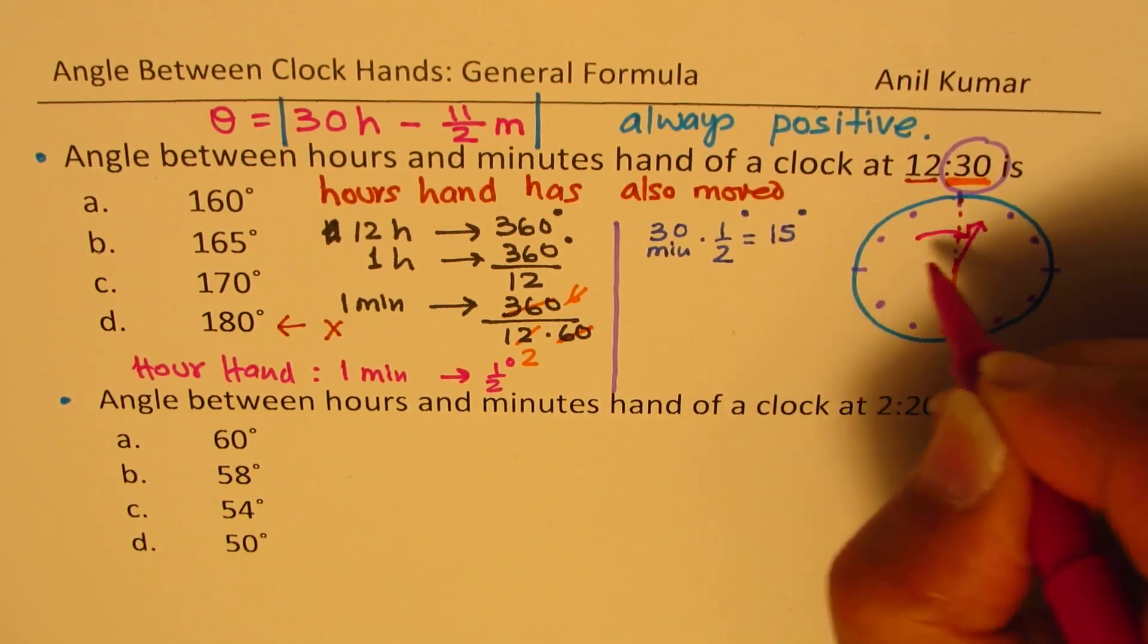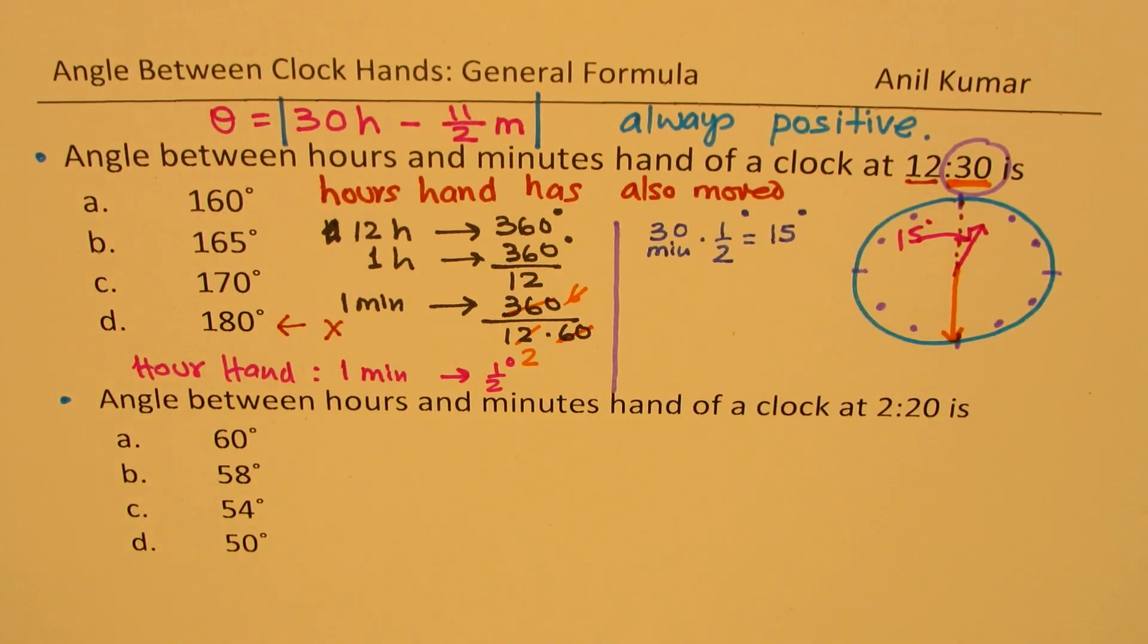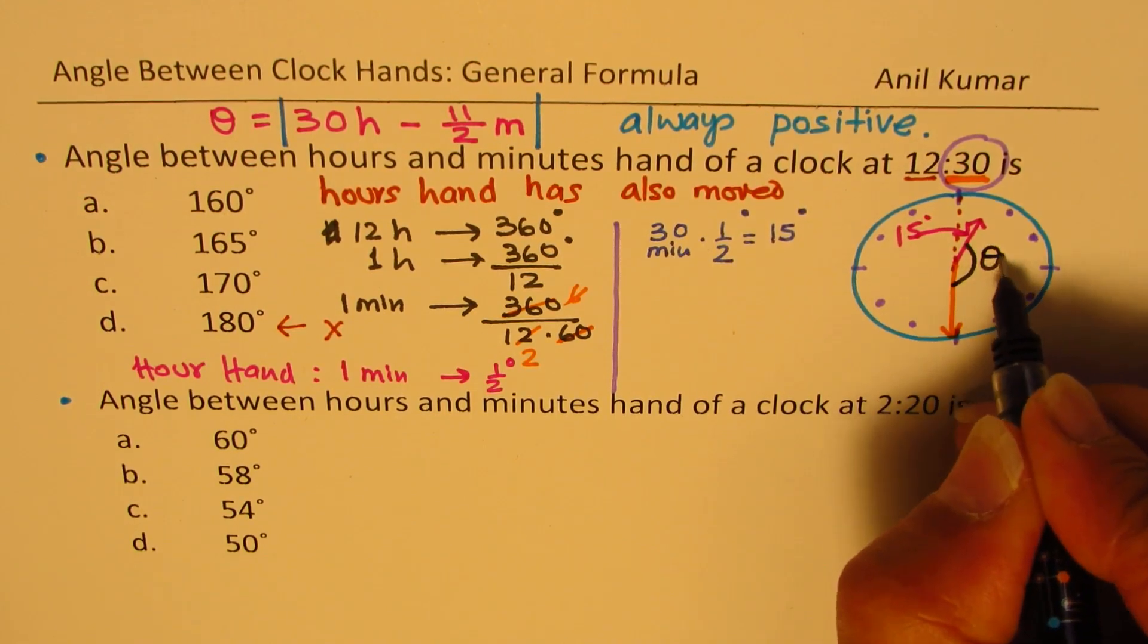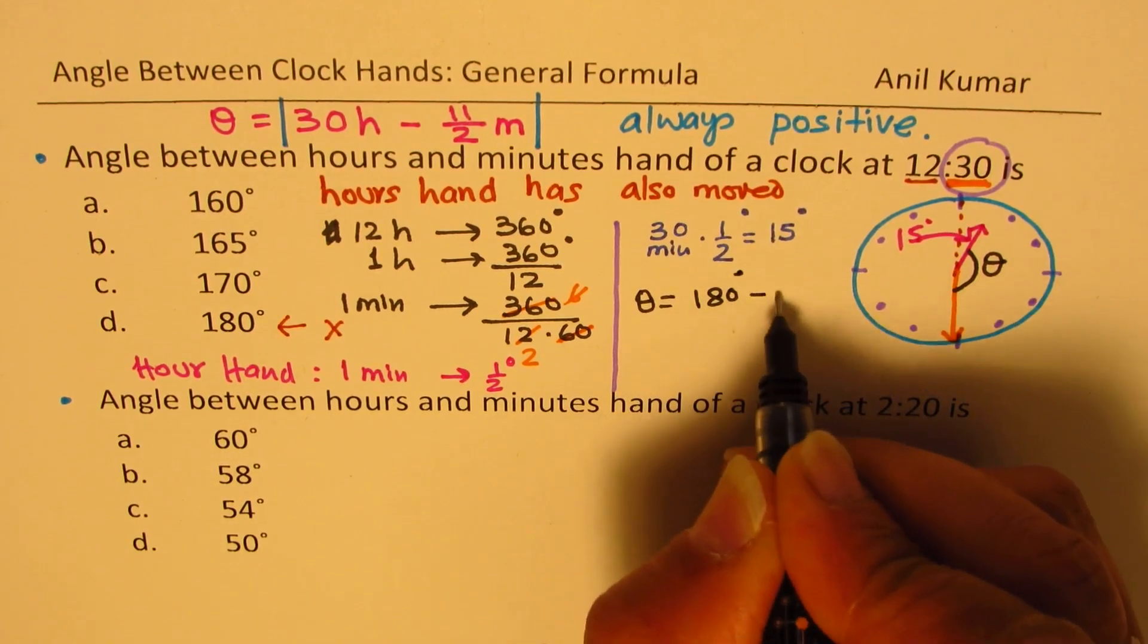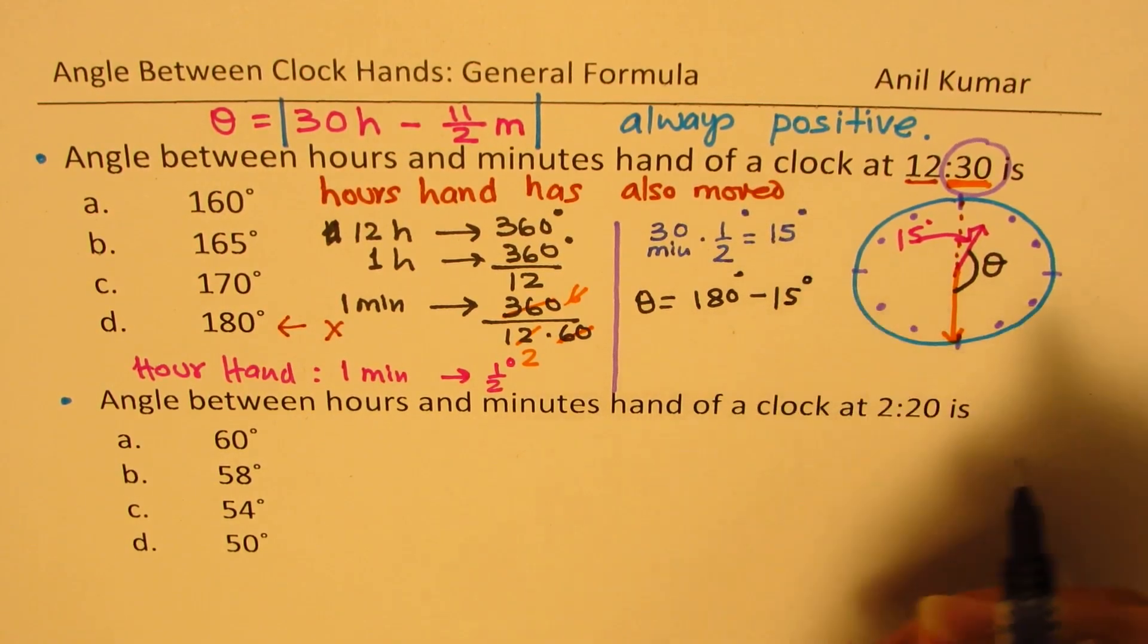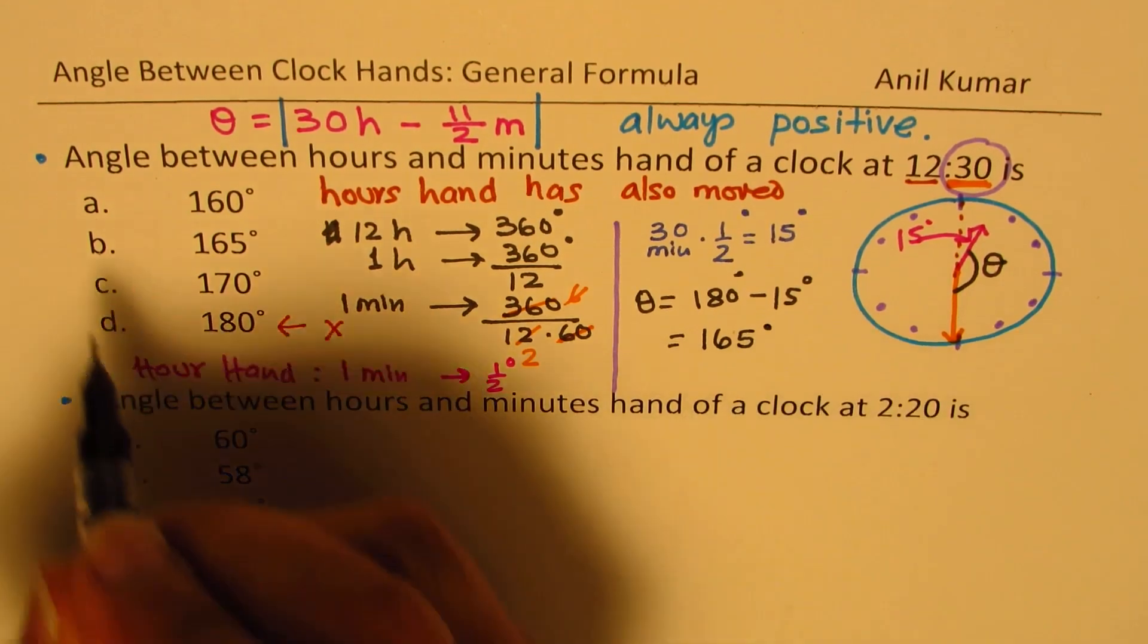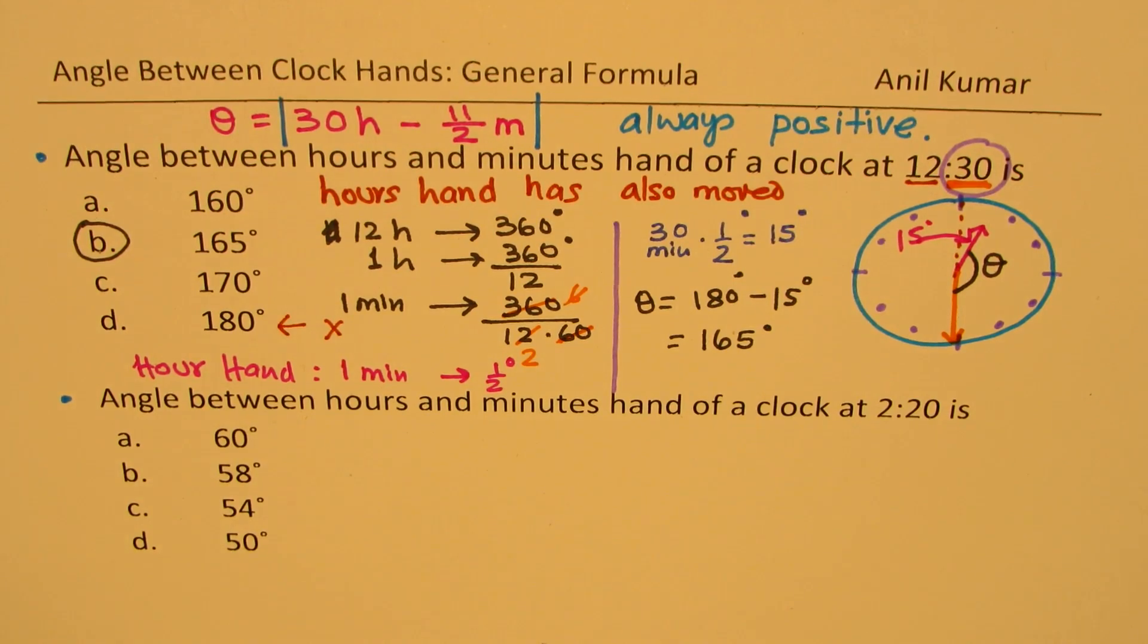So this is here 15 degrees. So it is 15 less than 180. Therefore, this angle, which we are looking for, the angle theta, is basically equal to 180 degrees minus 15 degrees. So the answer is 165 degrees. Option B is the right option.